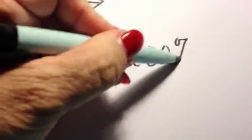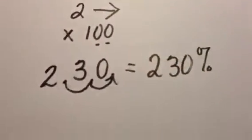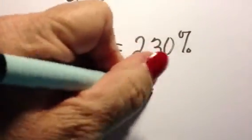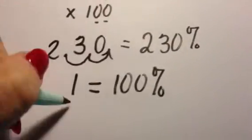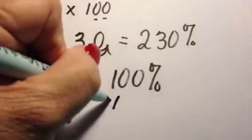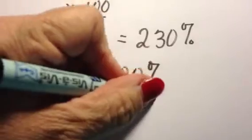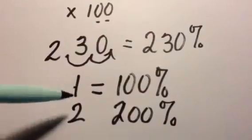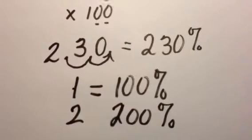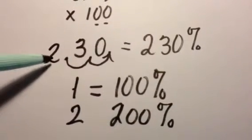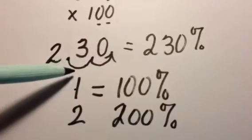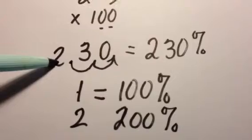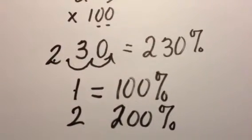Now keep this in mind: one whole is 100%, two wholes then would represent 200%. Think pie or pizza - one whole pizza is 100%, two of them would represent 200%. So if I have 2 point something decimal, I know that I'm going to have more than 200% but less than 300%.